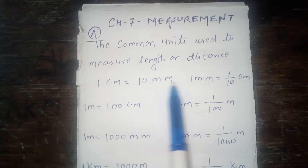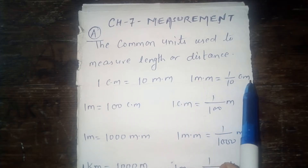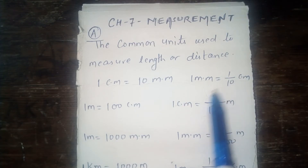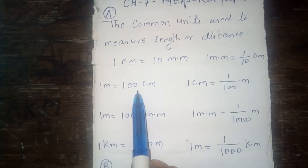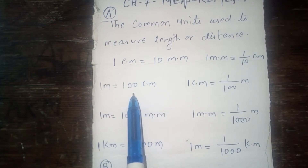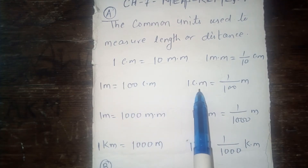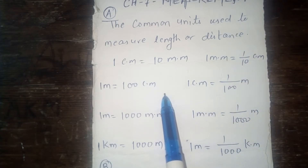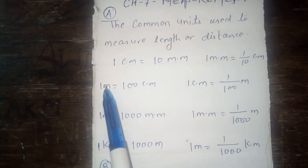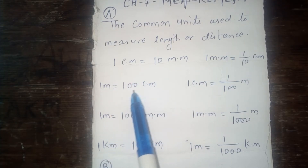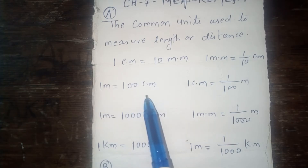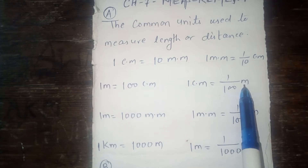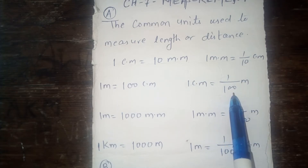When millimeter is converted to centimeter, then divide by 10. Again, 1 meter is equal to 100 centimeters, and 1 centimeter is equal to 1 upon 100 meter. When meter is converted to centimeter, then multiply by 100, and when centimeter is converted to meter, then divide by 100.